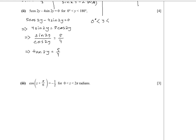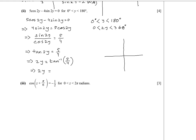Our angle here is 2y, not y, so we modify the range. Since y is in [0°, 180°], multiplying by 2 gives 2y in [0°, 360°]. Drawing the quadrant diagram: tan is positive in the first and third quadrants, negative in the second and fourth. The reference angle is 51.3°.